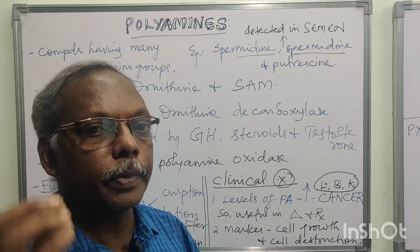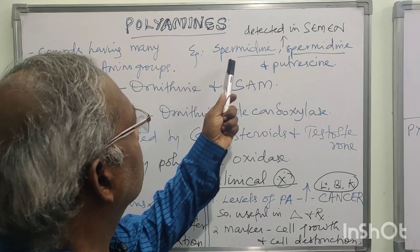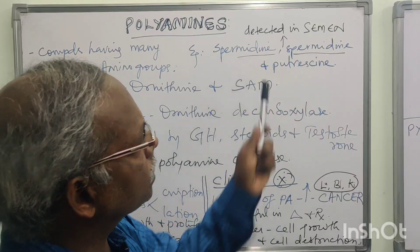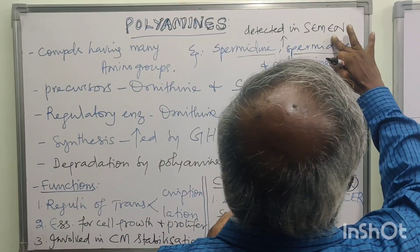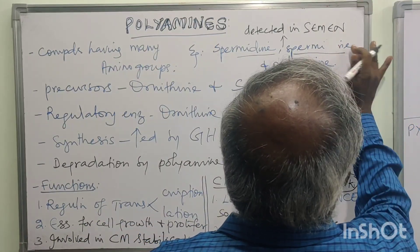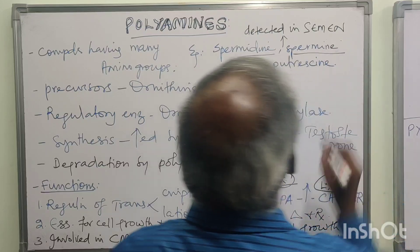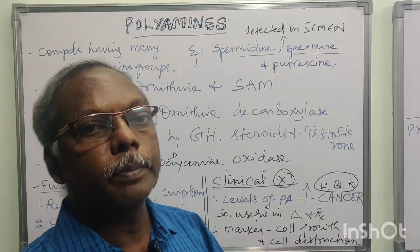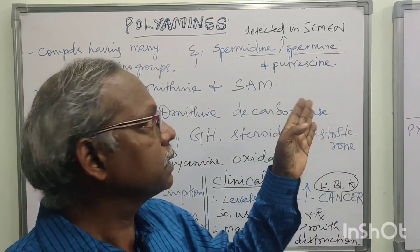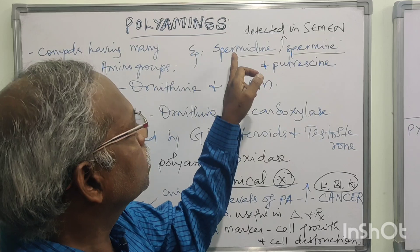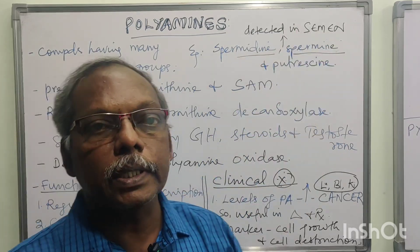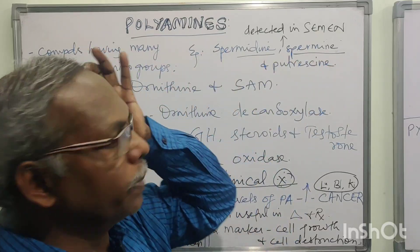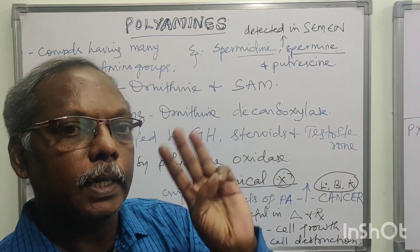A polyamine is one compound which has many amino groups. Examples are spermidine, spermine, and putrescine. Spermidine and spermine are present and located in semen, which is why they are named spermidine and spermine. These three are the polyamines.